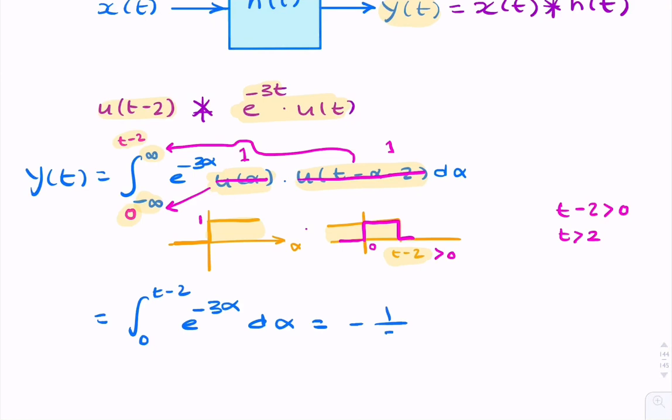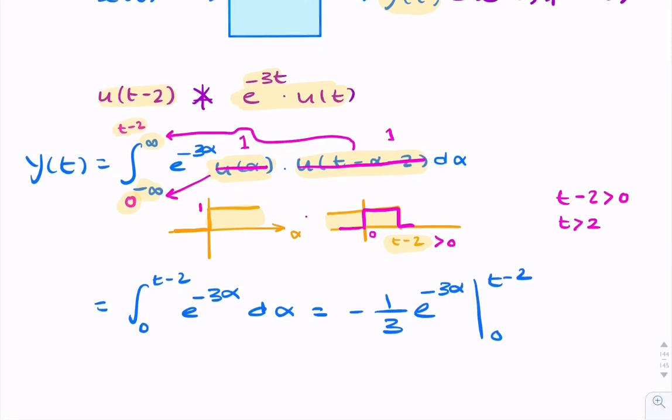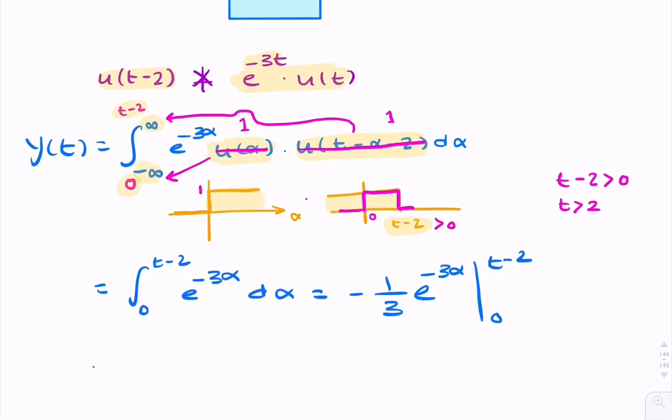The integral is minus 1 over 3, e to the minus 3α from 0 to t minus 2. And we can then say that's 1 over 3 times (1 minus e to the minus 3(t minus 2)).